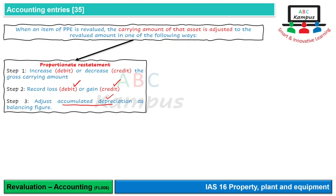यह method basically reflect करता है कि अगर asset की value बढ़ी है तो asset की जो gross carrying amount है उसको भी increase कर देते हैं, accumulated depreciation को भी increase कर देते हैं, इसकी net carrying amount भी increase हो जाती है।